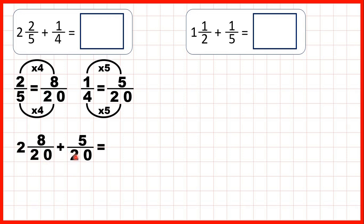So now we have 2 wholes, the denominator of our fraction stayed the same, and 8 plus 5 is 13, so that's 2 and 13 20ths as our answer.